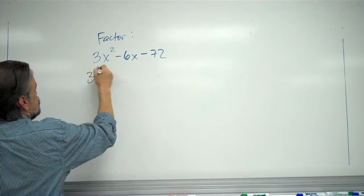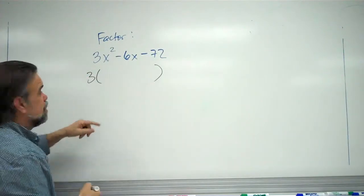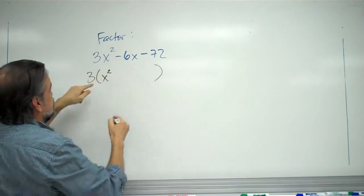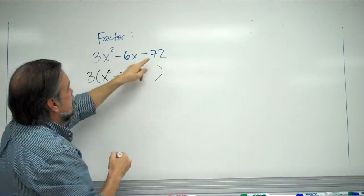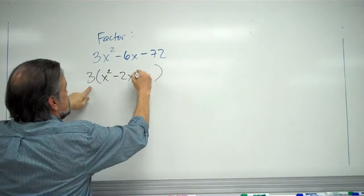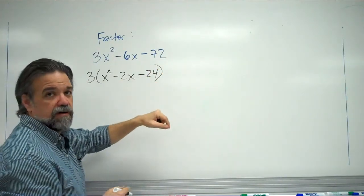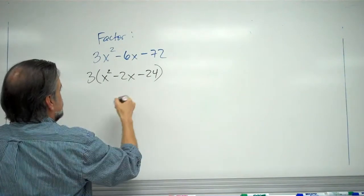Because now you say, this is just three times, well, 3x squared divided by 3 is x squared. Negative 6x divided by 3 is negative 2x. And negative 72 divided by 3 is negative 24. So, it's just three times this stuff here. And now, I know how to do that.